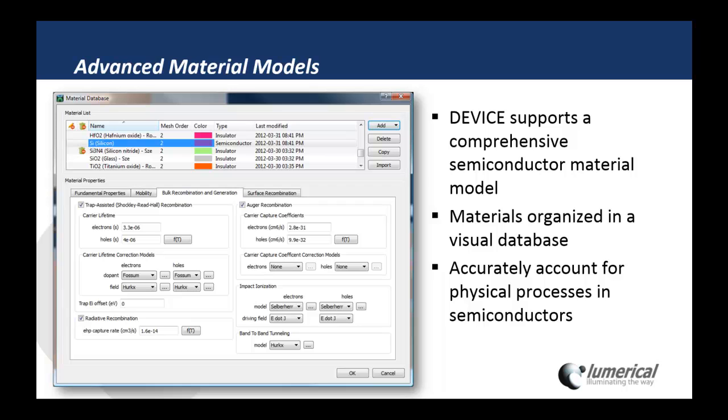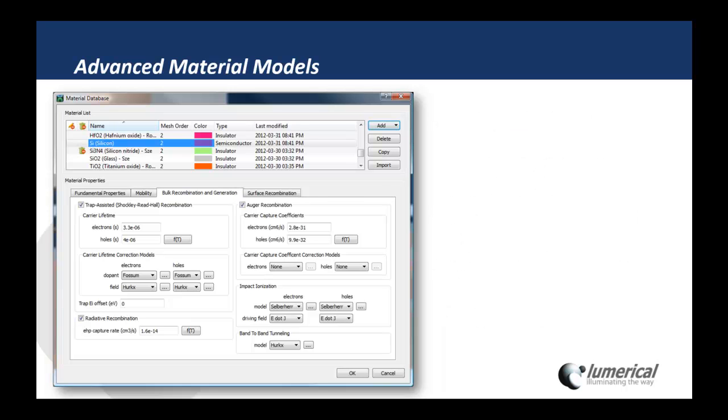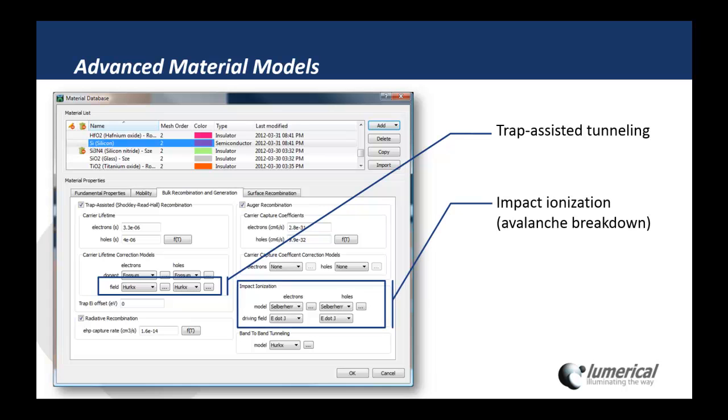We've also enhanced the material models in Device. Device supports a comprehensive semiconductor material model with materials organized in a visual database. This allows us to accurately account for physical processes in semiconductors in the course of a simulation. In the latest version of Device, we've added models for trap-assisted tunneling, impact ionization for avalanche breakdown, and band-to-band tunneling for Zener breakdown.